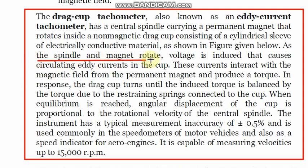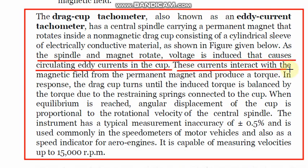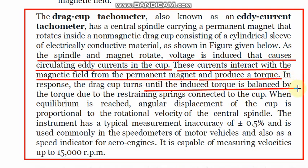As the spindle and magnet rotate, a voltage is induced that causes circulating eddy currents in the cup. These currents interact with the magnetic field from the permanent magnet and produce a torque. Due to this torque, the drag cup will respond and will keep turning until the induced torque is balanced by the torque due to the restraining springs connected to the cup.